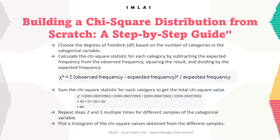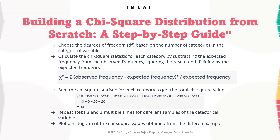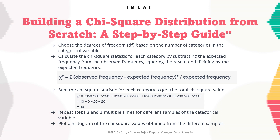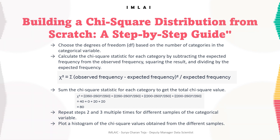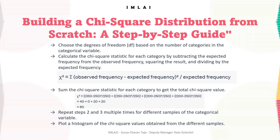As we have seen how to build a chi-square distribution from scratch, let us understand the relationship between the chi-square and standard normal distribution. Chi-square distributions are a family of continuous probability distributions, widely used in hypothesis testing, including the chi-square goodness of fit test and chi-square test of independence. For data scientists, the chi-square test of independence is most important.